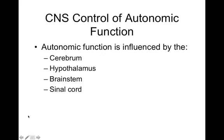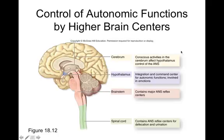The autonomic nervous system involves more than just the spinal cord and brainstem — there are higher brain centers in control of autonomic function: the cerebrum, hypothalamus, brainstem, and spinal cord all control the ANS. The cerebrum is involved with conscious activities that affect the hypothalamus and control the ANS. For example, if your blood pressure is high, changing your emotional state can change visceral responses — a hypothalamic function. If you start to relax, that can decrease your heart rate by making you more parasympathetically active, which can decrease blood pressure, though it's not under direct conscious control.